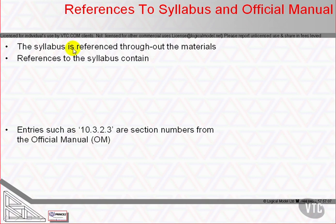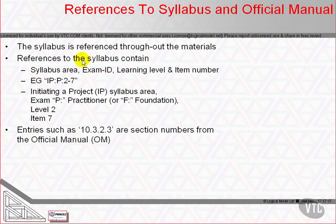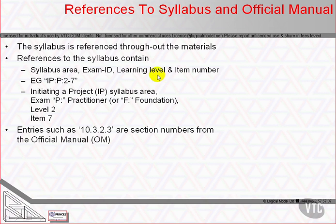The syllabus is closely cross-referenced throughout the course materials, and in each syllabus reference there is a syllabus area — for example IP for initiating a project, one of the processes we haven't yet seen in detail — and then there's an exam ID, which can only be P for practitioner or F for foundation, a learning level, which we will explain when we get to looking at the exam make-up, and an item number, which simply runs in sequence to a low number, normally less than 10. So any time you see something like SU:F:3-1, that would be starting up a project, foundation, question level 3, number 1.